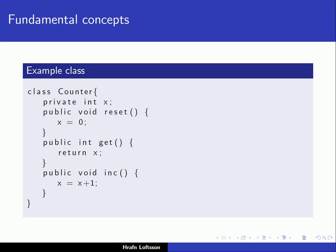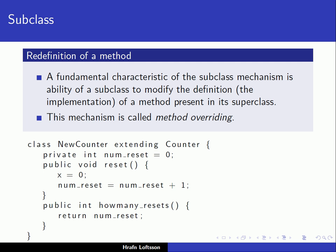Now this was our example class from earlier — our class counter — and now we come to the concept of subclass. The subclass is a class that depends on some other class. The fundamental characteristic of the subclass mechanism is the ability of the subclass to modify the definition — meaning the implementation — of a method present in the superclass. This mechanism is called method overriding.